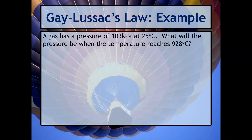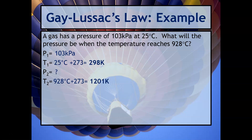Here's an example. A gas has a pressure of 103 kPa at 25 degrees Celsius. What would be the pressure when the temperature reaches 928 degrees Celsius? Just like we always do, we list out all the variables and extract the information from the problem. Notice I converted the temperatures right into Kelvin to make life easier. Our pressure unit is kPa, so that will also be the unit of our answer.